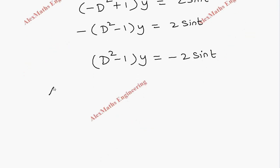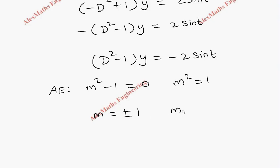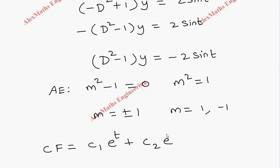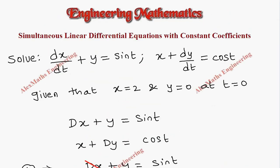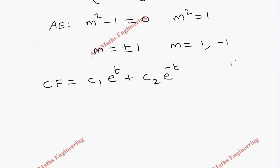For solving this, we write the auxiliary equation: m² minus 1 equal to 0. From this, m² equals 1, so m equals plus or minus 1. We got two values for m: one is 1 and the other is minus 1. So the complementary function is c1·e^t plus c2·e^(−t). We write in terms of t because the equations are given as dx/dt and dy/dt.